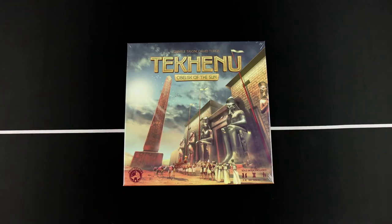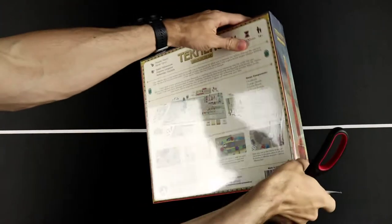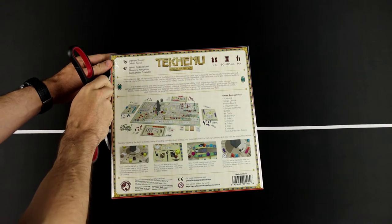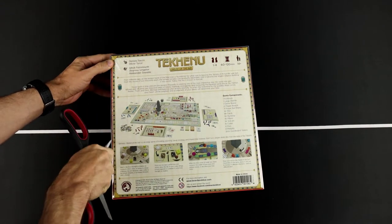All right, so today we are going to take a look at Tekenu: Obelisk of the Sun by Danielle Tashini and David Turksey. Let's take a look and see what we have inside. So I'm going to flip it over and see the back side of the box and we'll open up this shrink wrap here.